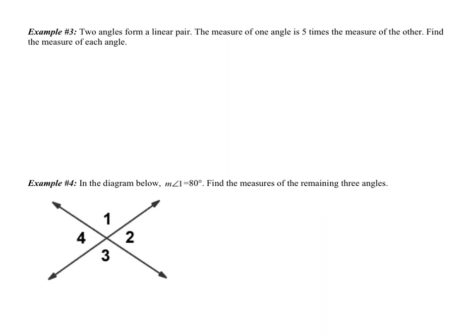Looking at example 3: two angles form a linear pair. They are supplementary, they form a straight angle, and they share a side. The measure of one angle is 5 times the measure of the other. I'll call one angle X and the other 5X. Pause the video and try examples 3 and 4 on your own — take about 3 or 4 minutes. Come back when you are finished.